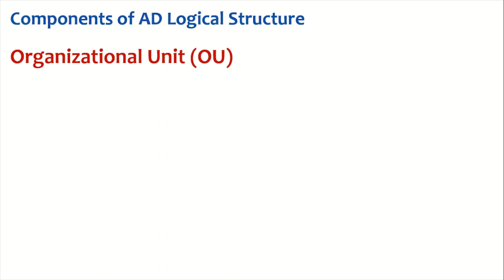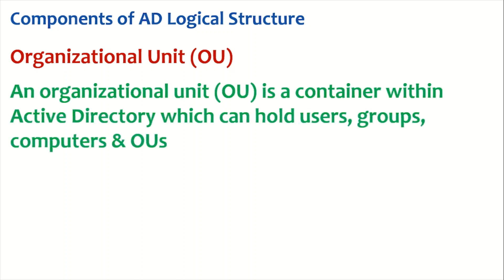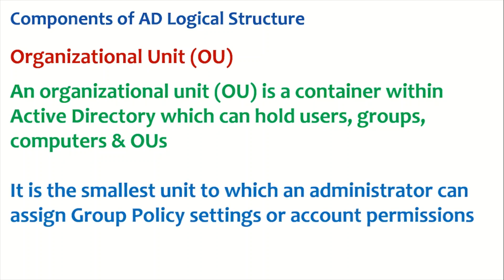One of the most important components of Active Directory logical structure is the Organizational Unit, or OU. An Organizational Unit is a container within Active Directory that can hold users, groups, computers, and other OUs — meaning we can nest the OU structure. It is the smallest unit to which an administrator can assign Group Policy settings or account permissions, and we'll see all of this in our lab sessions.